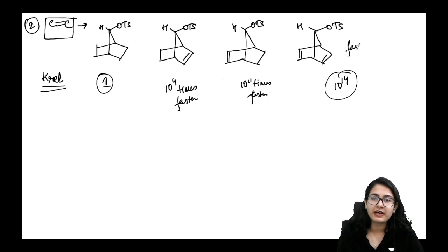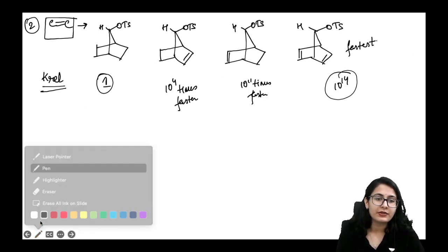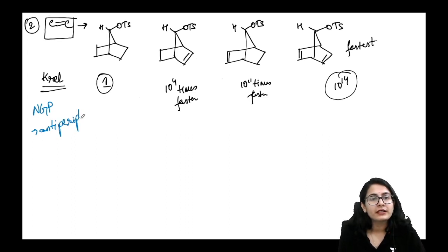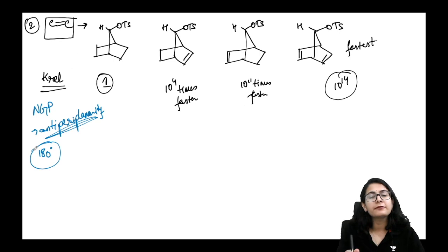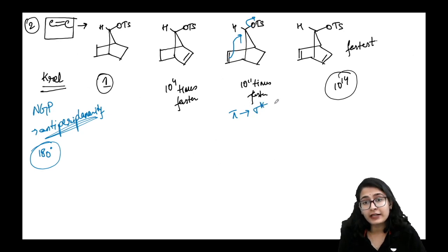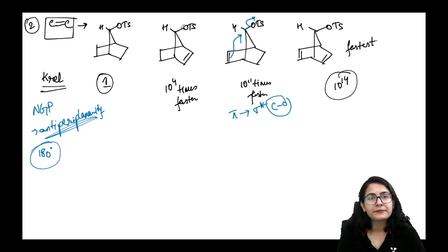Why is molecule 3 the fastest? NGP requires anti-periplanarity — a 180° relationship between the neighboring group and the leaving group. The pi bond pushes electron density into the σ* orbital of the C–O bond that must break. This anti-periplanar arrangement is why molecule 3 is so much faster.